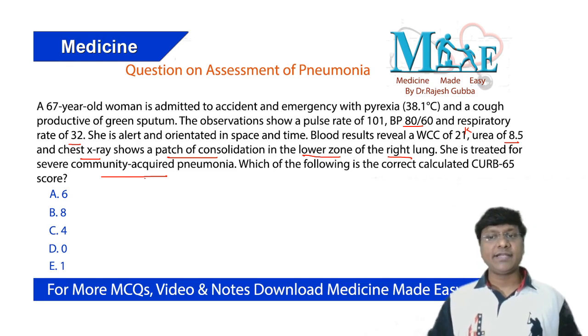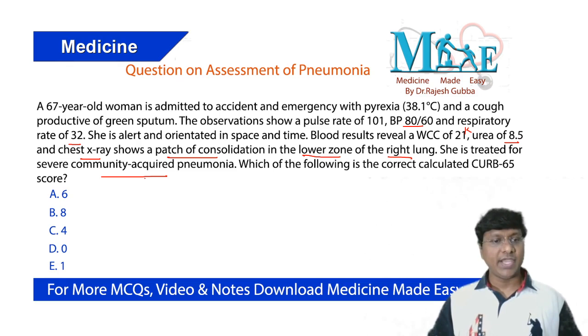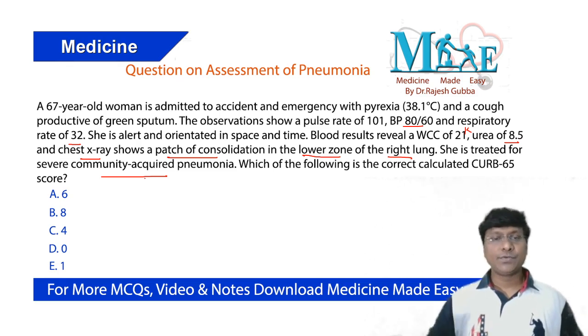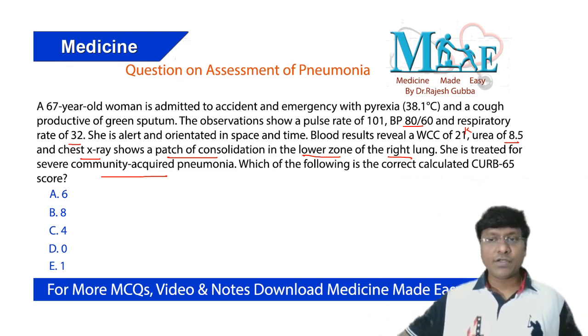She is treated for severe community-acquired pneumonia. Which of the following is the correct calculated CURB-65 score? The options are 6, 8, 4, 0, and 1.